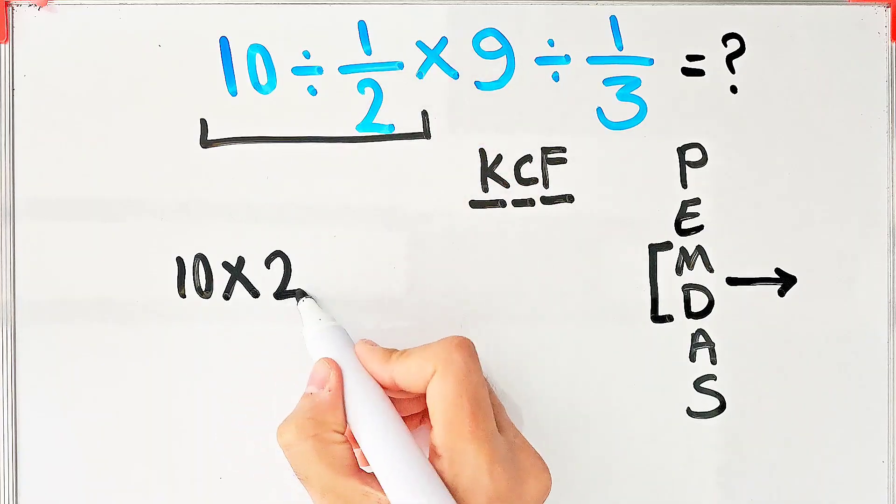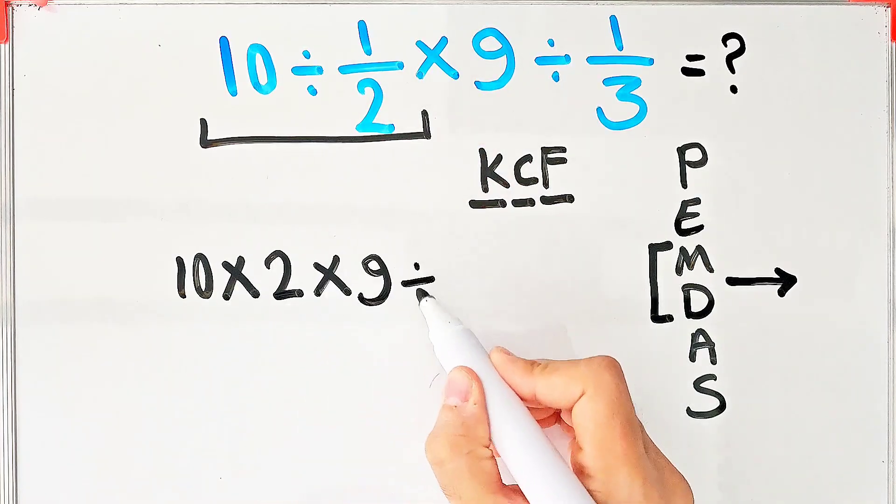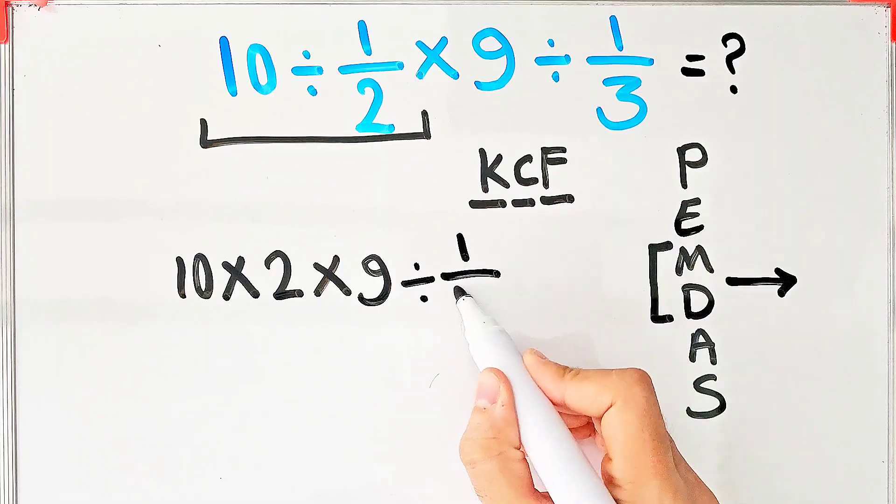Now we have a new expression: 10 times 2 times 9 divided by 1 over 3.